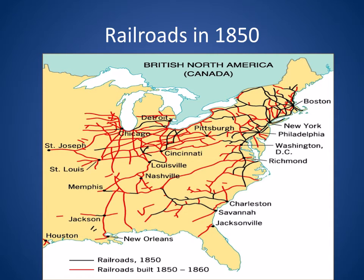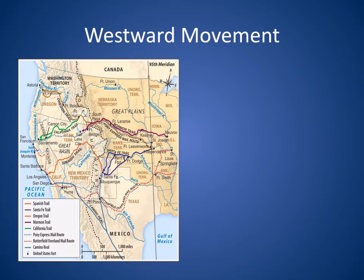You can see how heavily developed the northern railroads are and how little developed the southern railroads are. Think about this — it will come back to bite the South when it comes to the Civil War. With westward movement, the growth of railroads and canals helped the growth of the industrial economy, moving products quickly and supporting the westward movement of settlers.